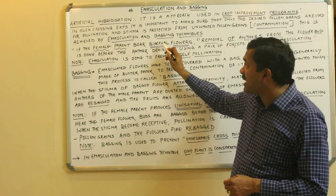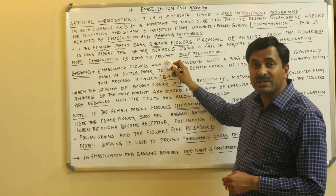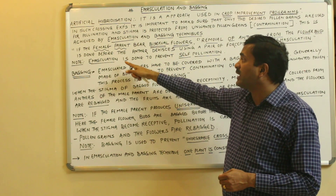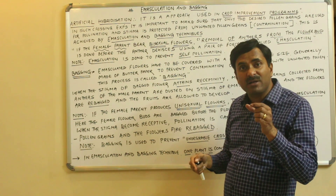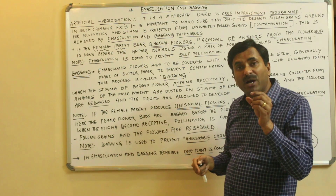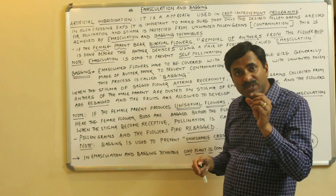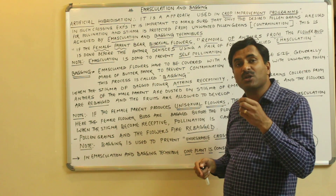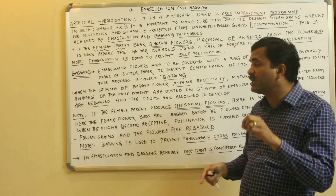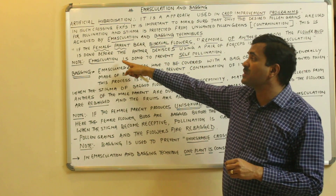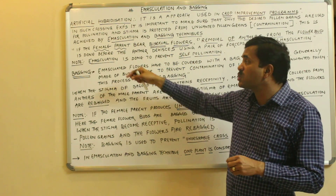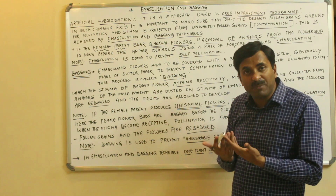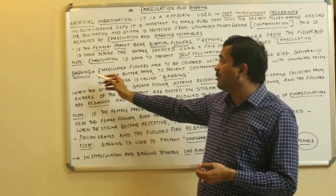Emasculation in a bisexual flower is done to prevent self-pollination. In a bisexual flower, both the male reproductive part and the female reproductive part are present, so there are chances of self-pollination. To prevent that self-pollination, we do emasculation so that cross-pollination can be achieved in crop development programs.